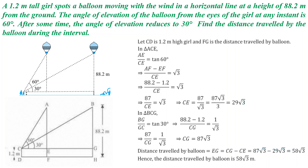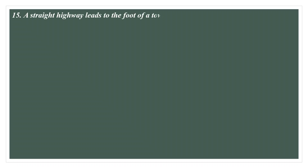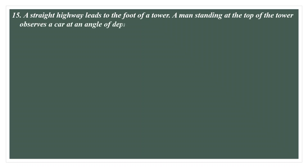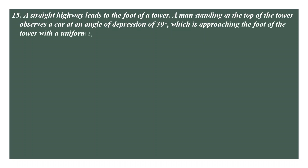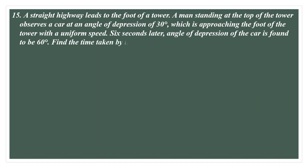Let us move on to the next question. The second question is: A straight highway leads to the foot of a tower. A man standing at the top of the tower observes a car at an angle of depression of 30 degrees, which is approaching the foot of the tower with a uniform speed. After 6 seconds, the angle of depression of the car is found to be 60 degrees. We need to find the time taken by the car to reach the foot of the tower from that particular point. To solve this, we require a diagram.